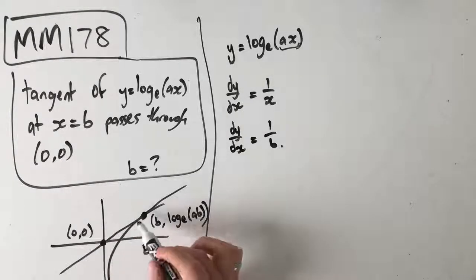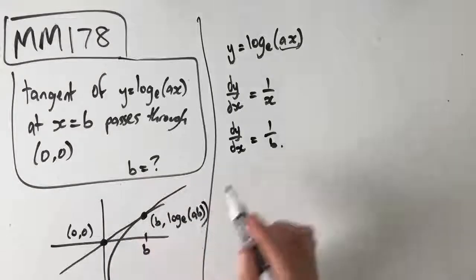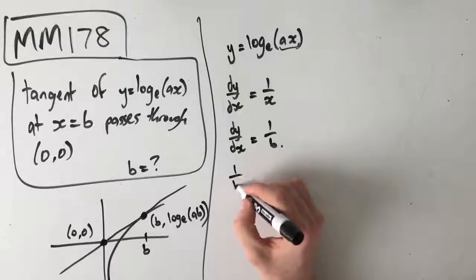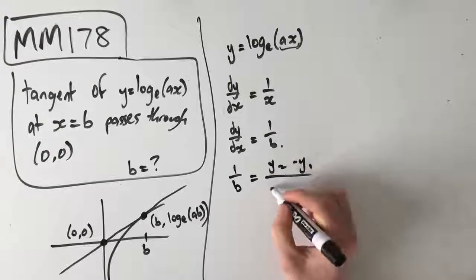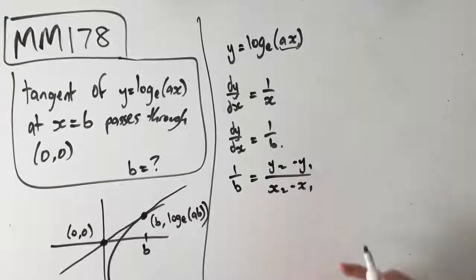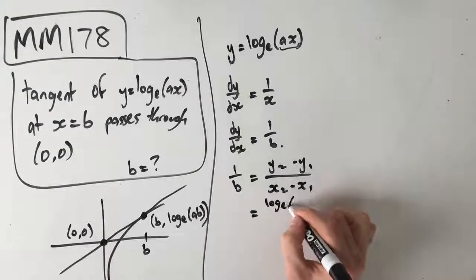If we know that it passes through the origin, we know that the gradient from this point to this point is equal to 1 over b, which means that 1 over b is equal to rise over run: y2 minus y1 over x2 minus x1